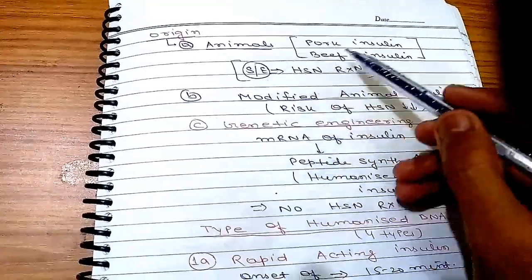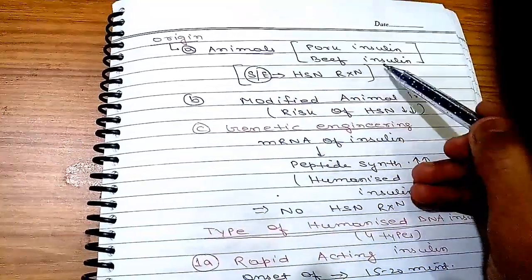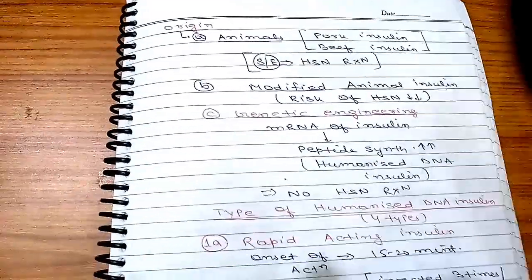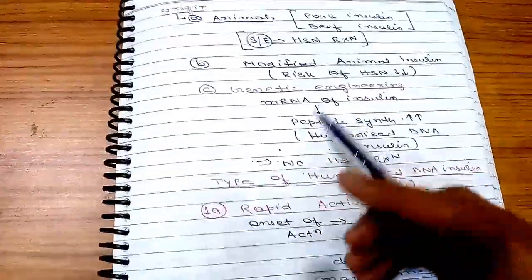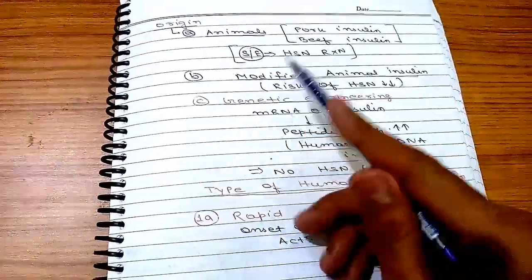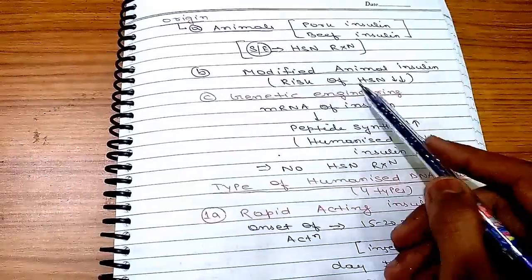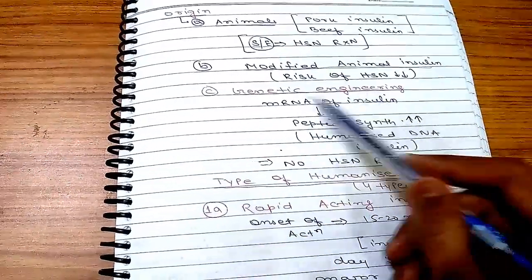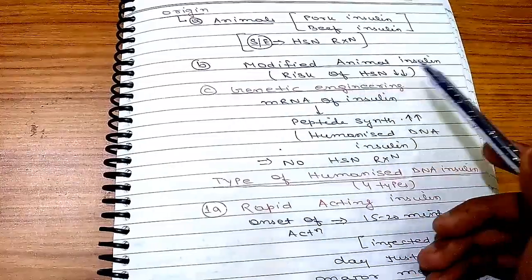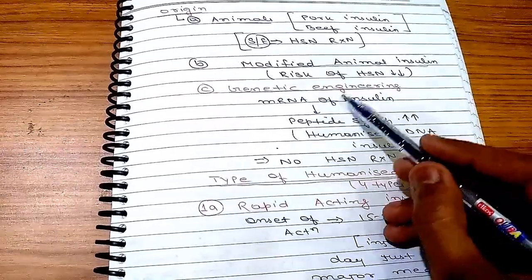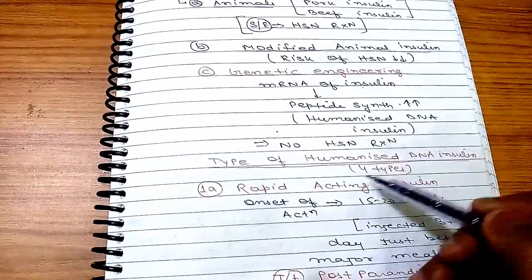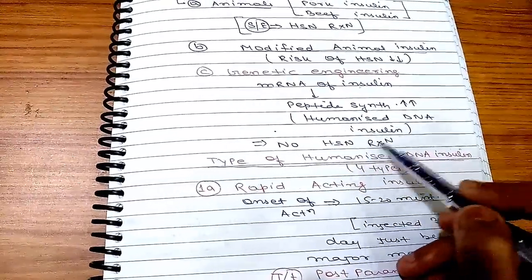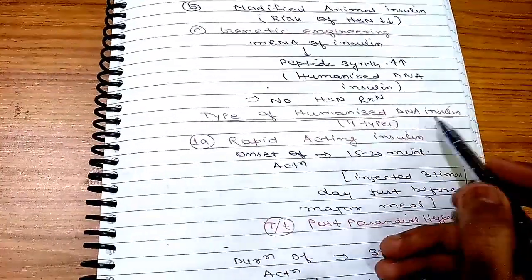Animal-derived insulin — pork insulin and beef insulin — can cause hypersensitive reactions. Modified animal insulin was developed to reduce this risk. We have now developed genetically engineered insulin using mRNA to produce peptide synthesis, also known as humanized DNA insulin. There is no hypersensitive reaction associated with humanized DNA insulin.